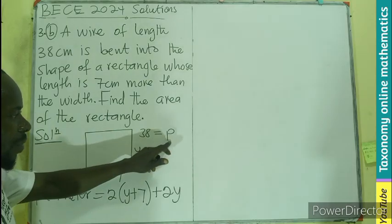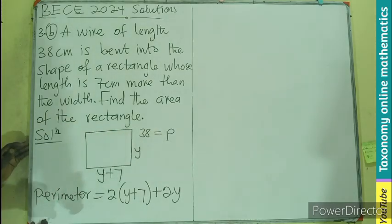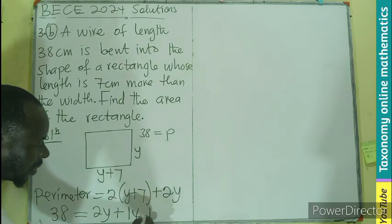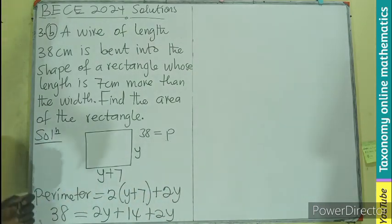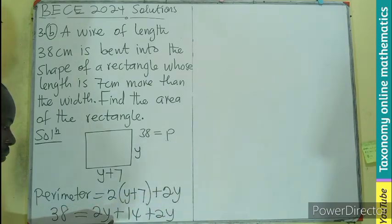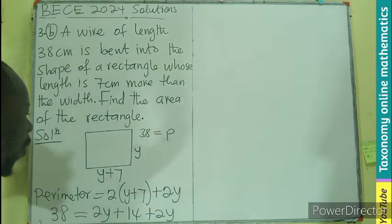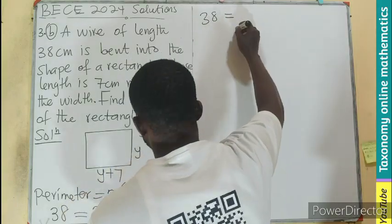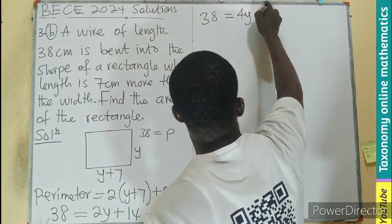But don't forget, the perimeter we know is 38. So 38 equals to 2 times Y, 2Y, 2 times 7, 14 plus 2Y. So we can rearrange here to find Y. 2Y plus 2Y will be 4Y. So in the left, 38, the right, 4Y plus 14.